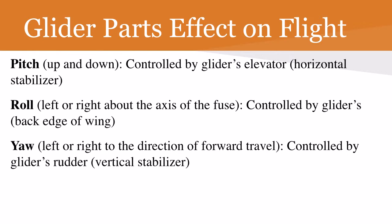For the yaw — the yaw is left or right relative to the direction of forward travel. If you're walking and you turn a corner to go left or right, you're changing the direction of forward travel. On your elastic launch glider, the yaw — the left or right direction of forward travel — is controlled by the glider's rudder, which is the vertical stabilizer.